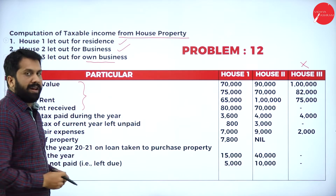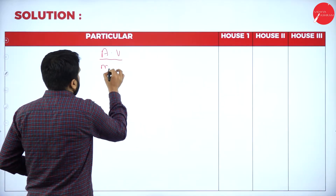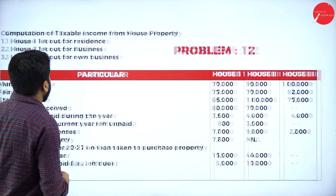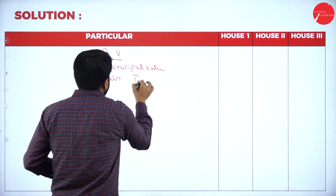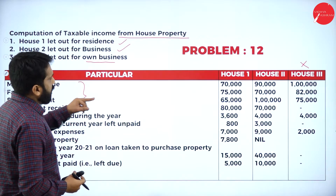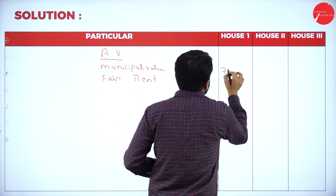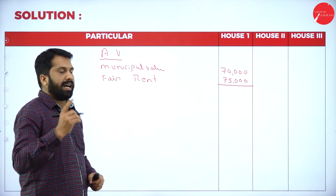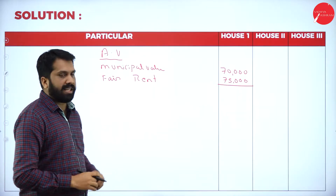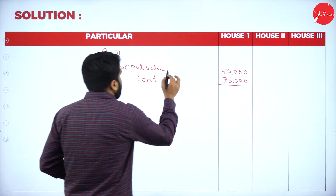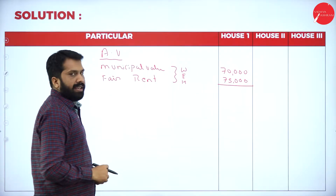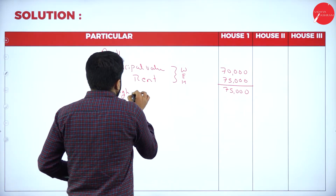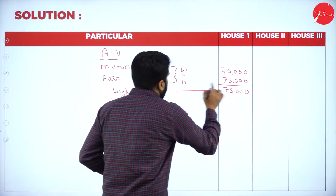For house one, the first step is municipal value and fair rent. Municipal value is 70,000 and fair rent is 75,000. We will consider whichever is higher. In this case, we got 75,000 as the higher value.